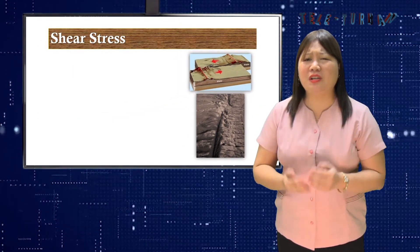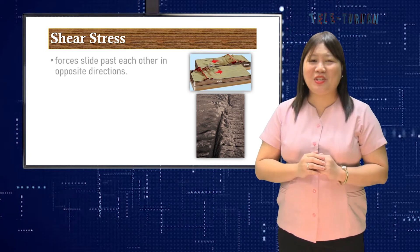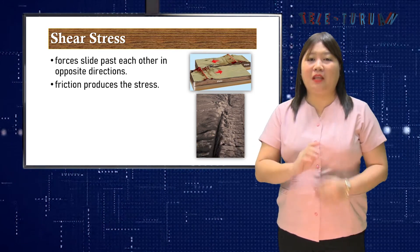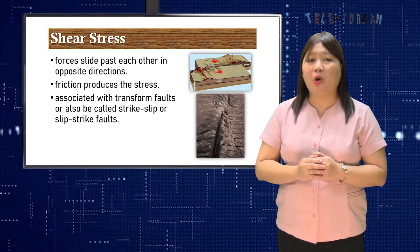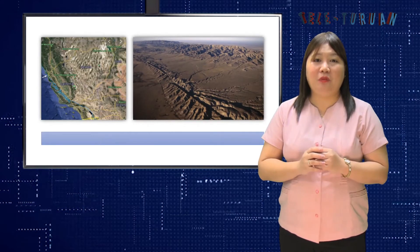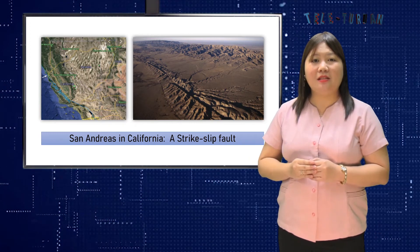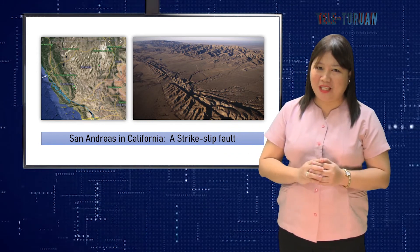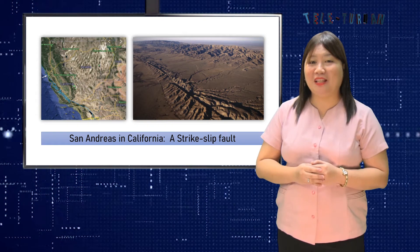Deep within the Earth, the pressure is very great. Near the surface, if the stress continues, the rock will fracture and break. Shear stress happens when the forces slide past each other in opposite directions. Friction between the plates grinding past one another produces the stress. Shear stress is associated with transform faults, also called strike-slip faults. A well-known example is the San Andreas fault in California — a transform fault boundary where the land west of the fault moves northeastward while the North American plate moves southwest, separating the Pacific plate on the west and the North American plate on the east.